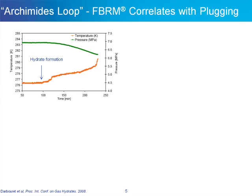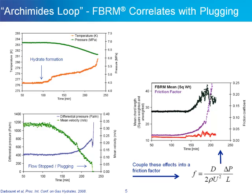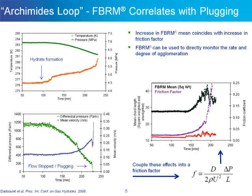Looking at the Archimedes loop, temperature and pressure were monitored from the onset of hydrate formation through to stoppage of flow. Looking at the temperature, pressure, and mean velocity information, we can couple these factors to generate a friction factor, which is shown here in the graph on the right-hand side in purple. Looking at the FBRM data taken concurrently, we see that there is an increase in the FBRM mean dimension at the same time the friction factor increases. This is essentially associated with agglomeration in the system. FBRM can be used to directly monitor the rate and degree of agglomeration and identify conditions where agglomeration occurs and plugging is probable.